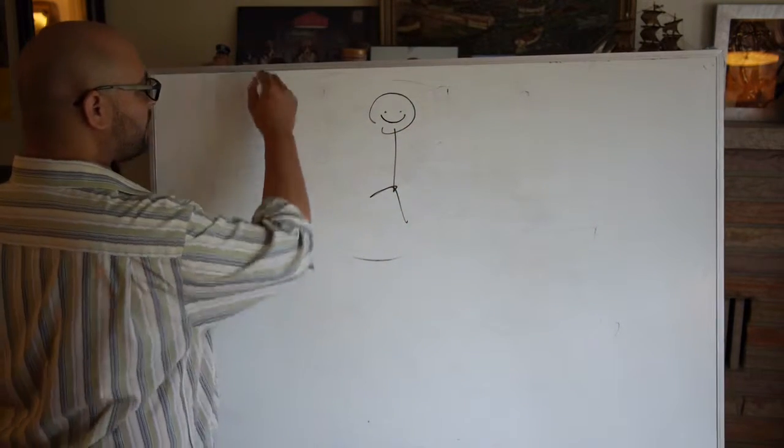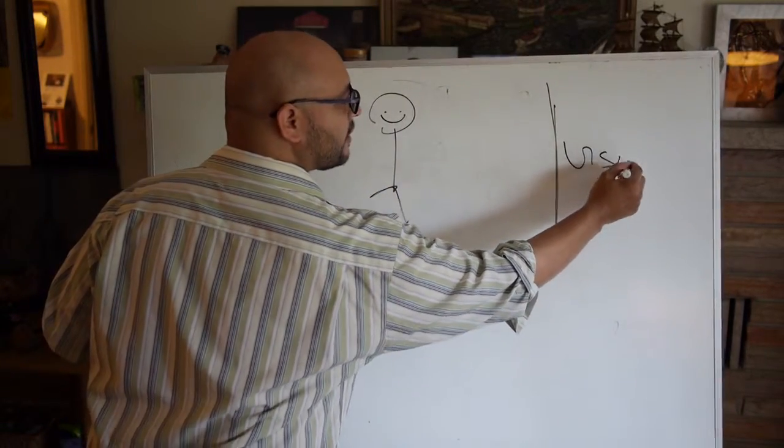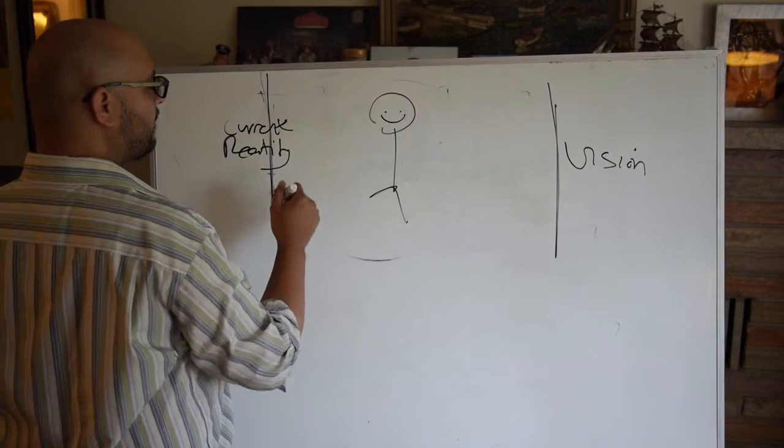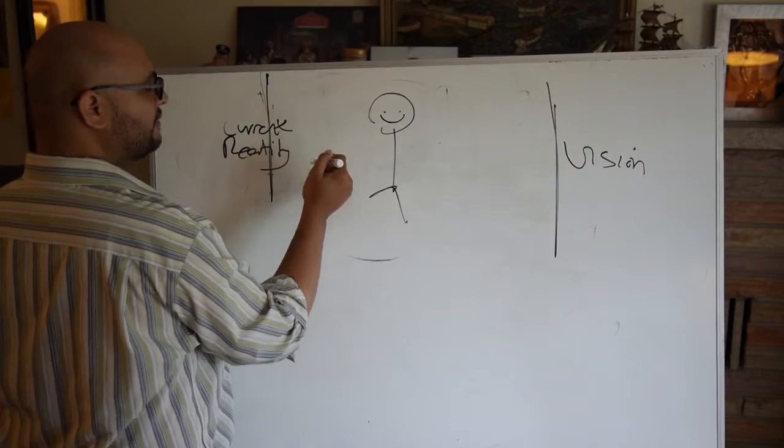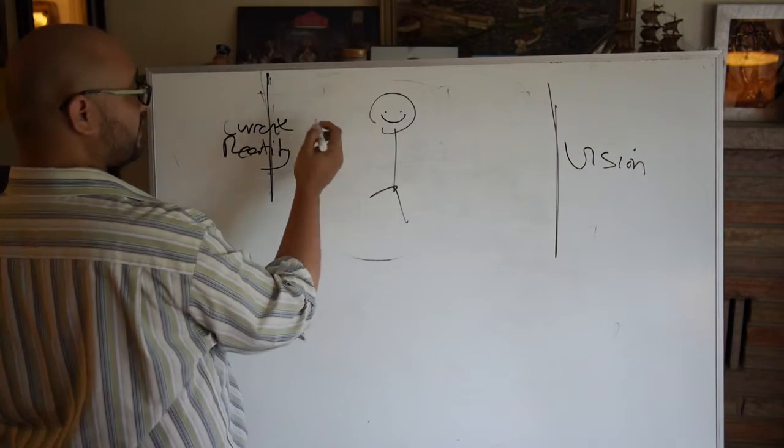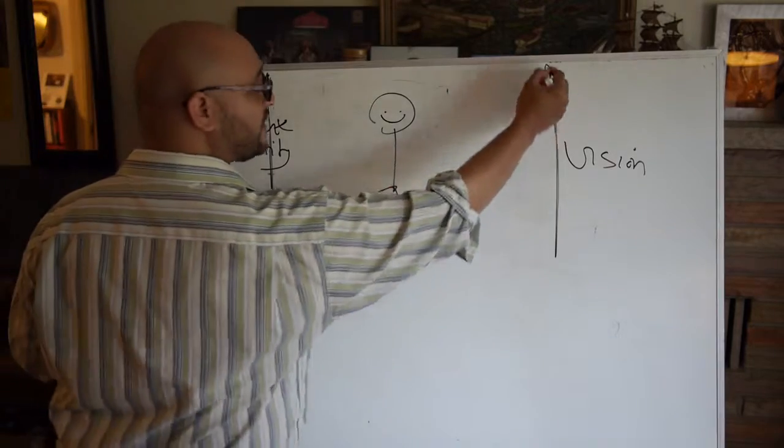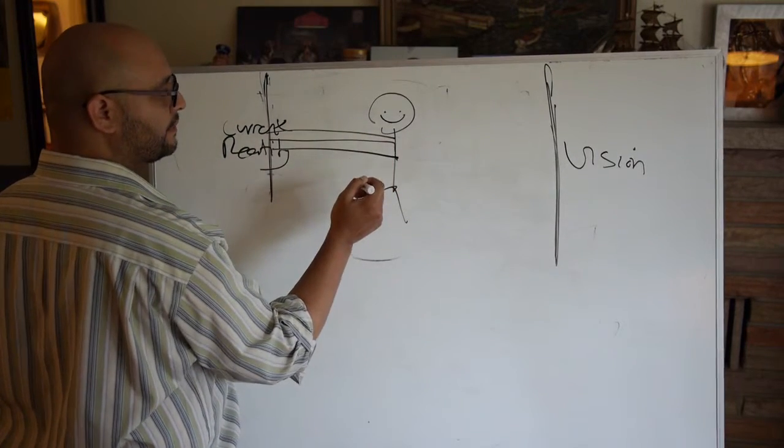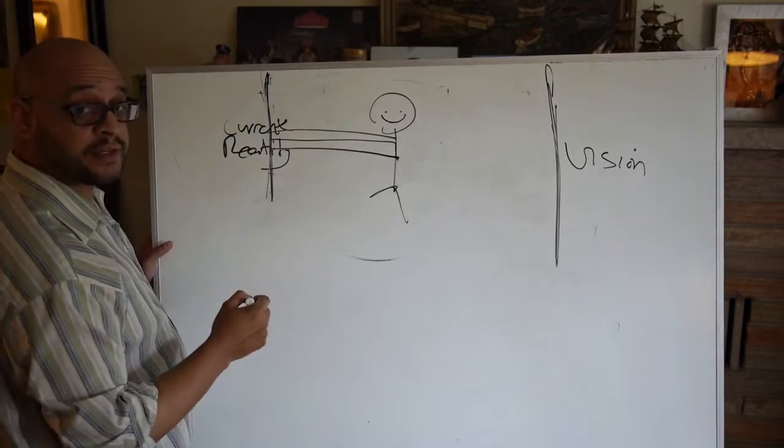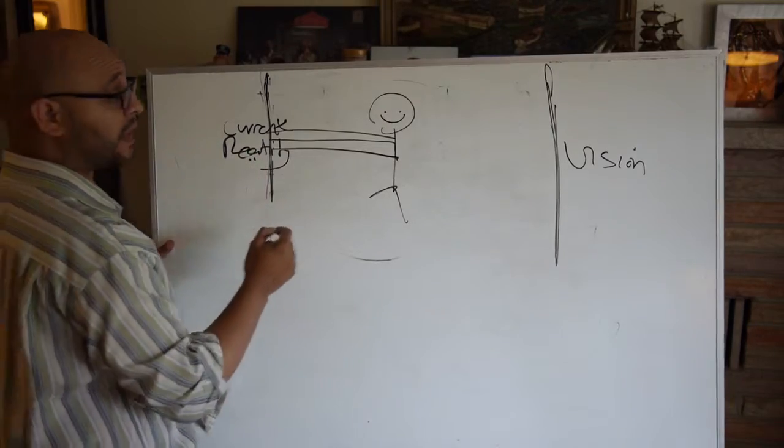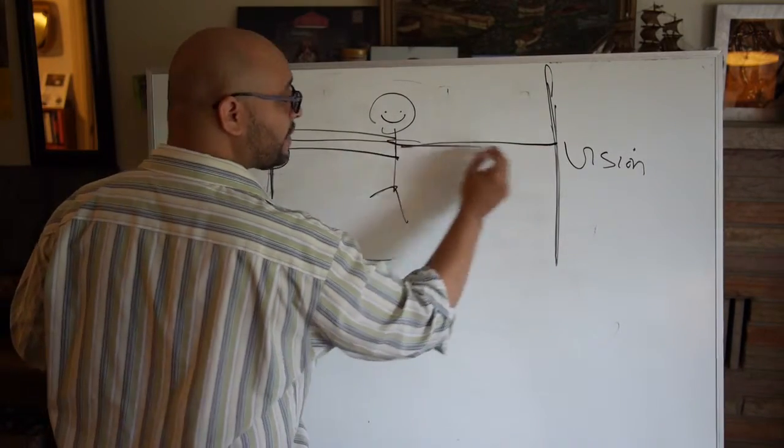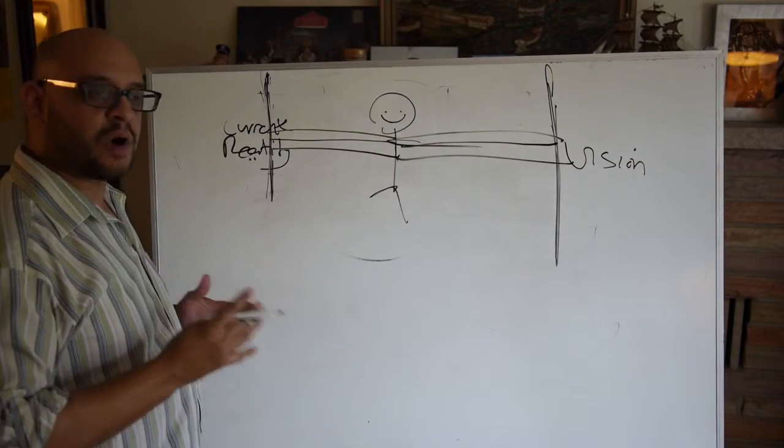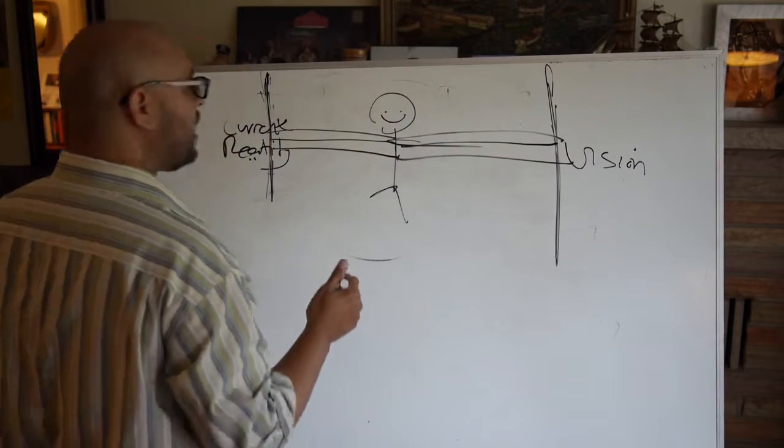This is Bob. This is Bob's current reality. This is where Bob wants to go. This is his vision. Now, if Bob, let's use the overweight example again. So this is his current reality of being overweight. He wants to hit this weight over here. Now, each of these realities, let's say they have a rubber band attached to Bob.